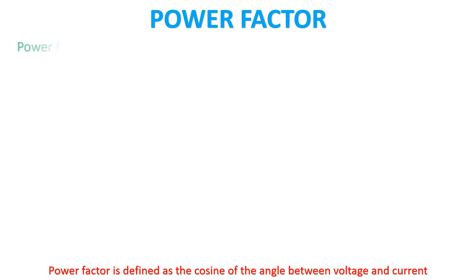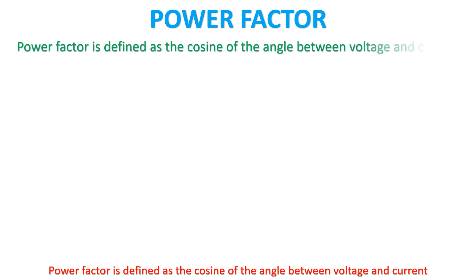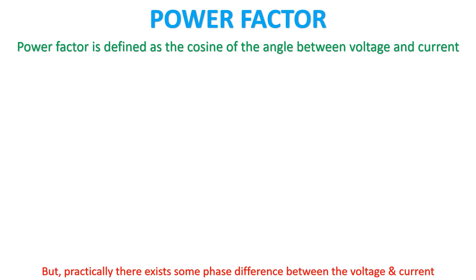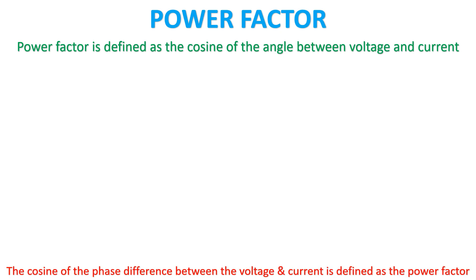Power factor is defined as the cosine of the angle between voltage and current. Ideally in AC circuits, the phase difference between voltage and current is zero. But practically there exists some phase difference between the voltage and current. The cosine of this phase difference is defined as the power factor.